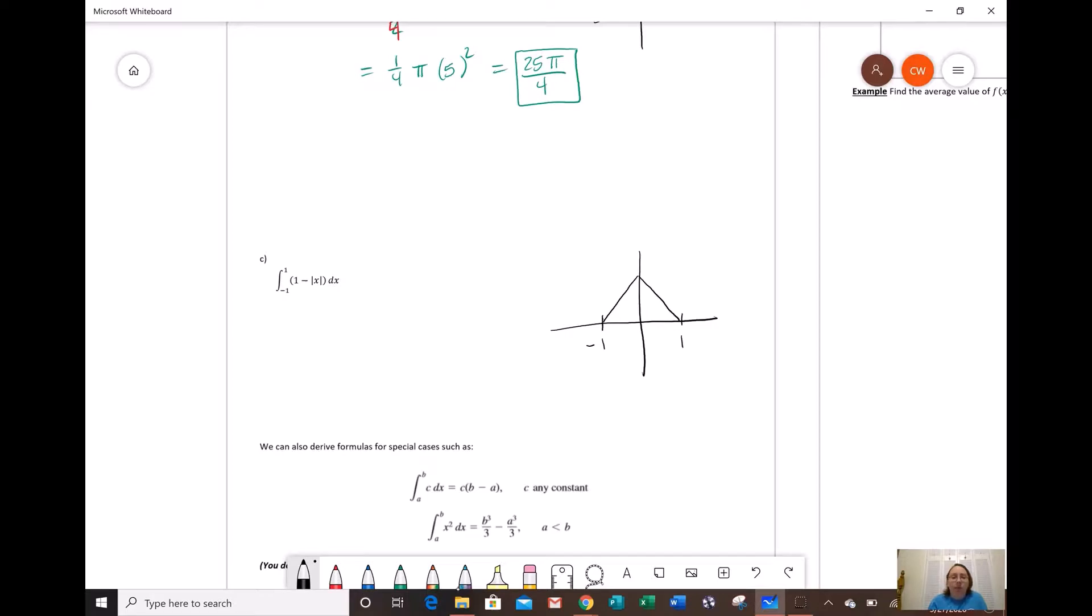If you don't believe me, plug it in. Negative 1, plug it in, that becomes positive 1. 1 minus 1 is 0, and that's this point. If x is 1, we get 1 minus 1, which is 0, so that's that point. We want from negative 1 to 1, so we want that whole region right there. That's the area that we're looking for.